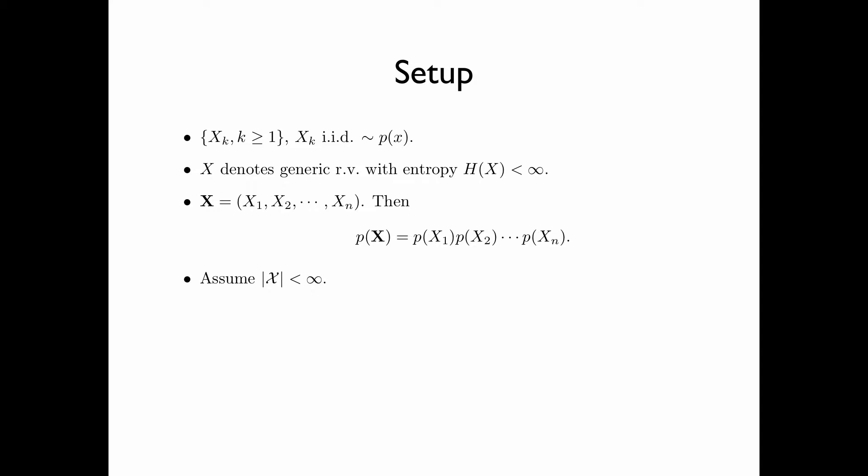Compared with the setup for weak typicality, we make the additional assumption that the alphabet is finite. Let the base of the logarithm be 2, that is, the entropy of X is in bits.